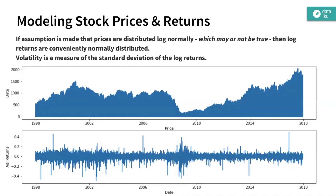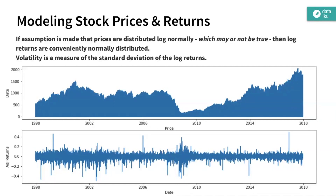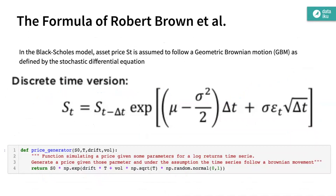You can measure what is called the adjusted returns. If you look at log returns, it should be a Gaussian. If you take that hypothesis for granted, Gaussians have nice properties, so it's easy to simulate them.